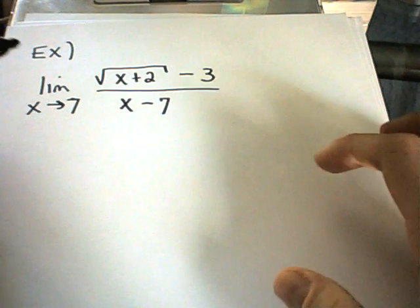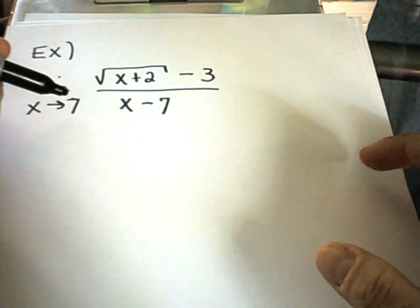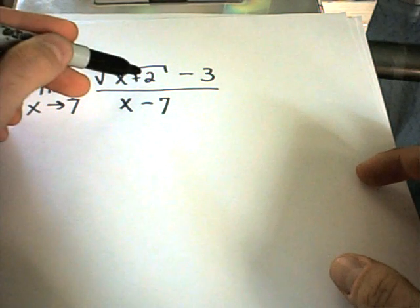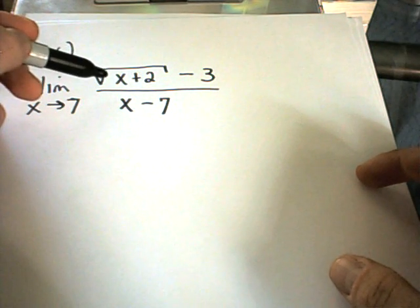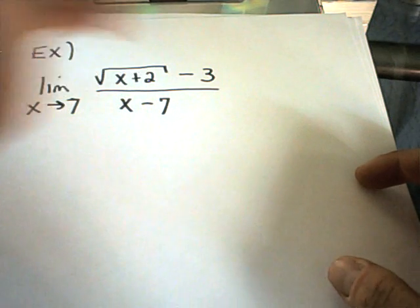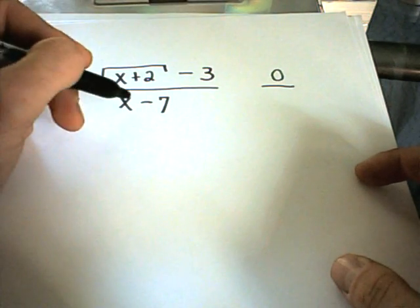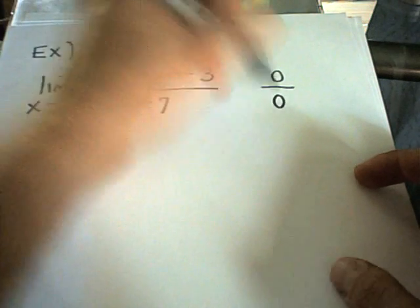Alright, so in this limit problem, if we plug in 7, notice that we get 7 plus 2, which is 9. The square root of 9 is 3, and 3 minus 3 gives us 0 on top. If we plug 7 in the bottom, we certainly get 0.